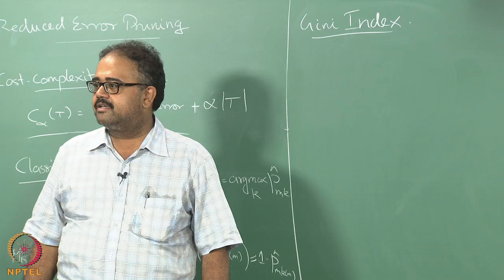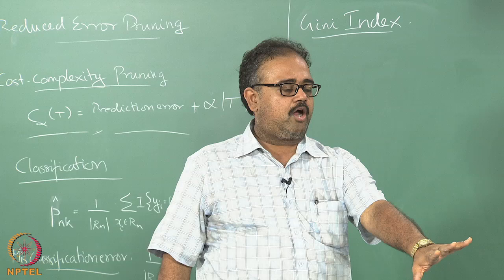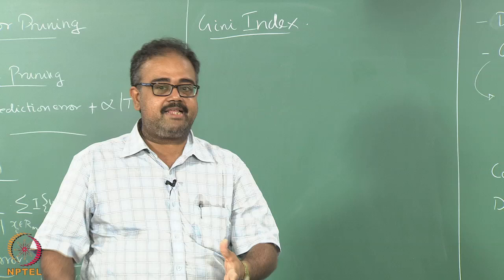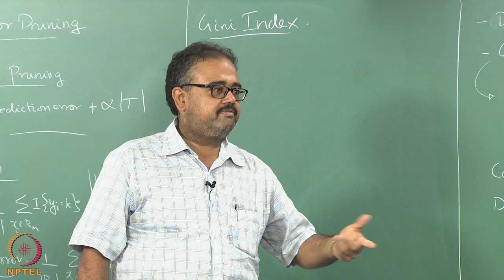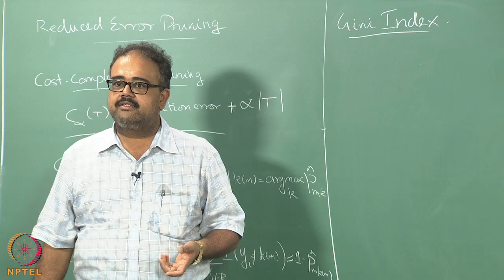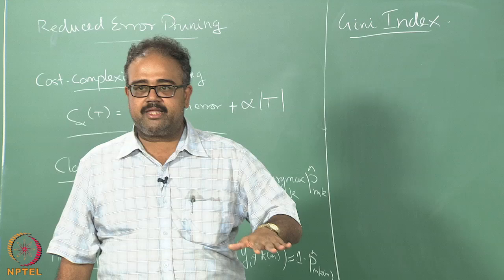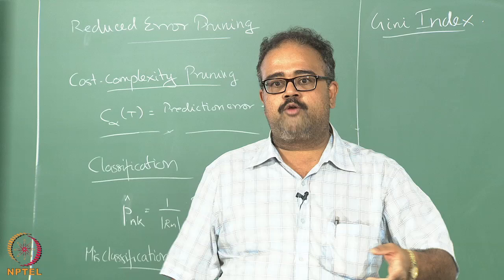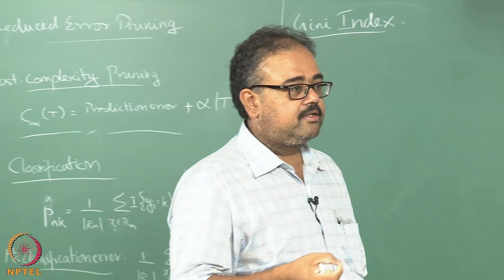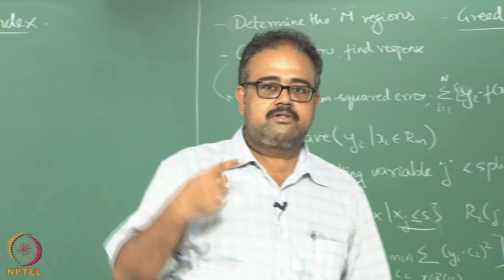Suppose I have K classes. In this particular region are there a lot more class 1 data points than classes 2 to K? If I am able to split regions such that the class distribution is skewed within that region, I am doing something good. If the class distribution is uniform, I am doing something bad — whatever class label I output I will have a lot of error. The ideal leaf is so skewed that there is only one class present. The skewness measure is what I look for, and the more skewed the better.